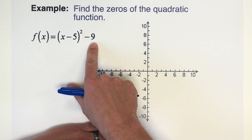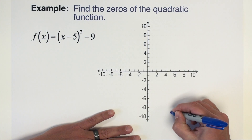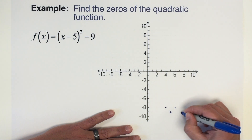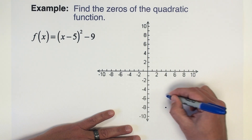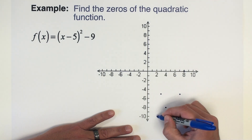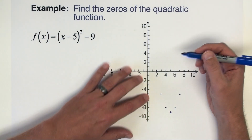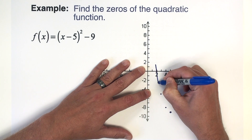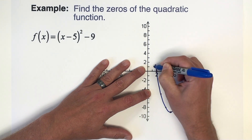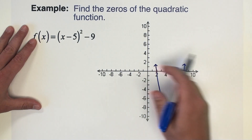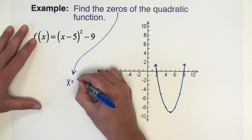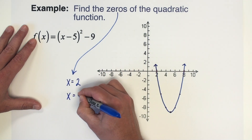This quadratic function has a vertex at (5, -9). It's got a scale factor of one and it opens up, so going one out we go up one, two out we go up four, then three from the vertex up nine — and we've actually hit the x-axis, which is what we're interested in. So our zeros are at x equals 2 and x equals 8.